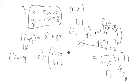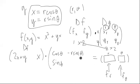Now for the derivatives with respect to theta: the derivative of x with respect to theta is negative r sine theta, since we treat r as a constant. And the derivative of y with respect to theta is r cosine theta. So our two-by-two dg matrix is now fully filled in.